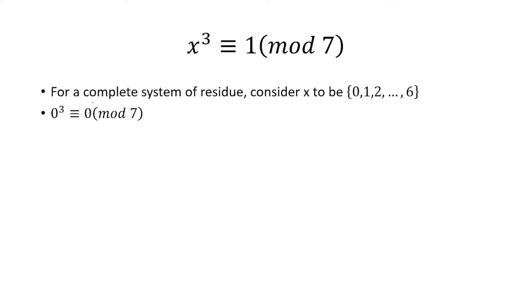First, 0 cubed is congruent to 0 mod 7. Now, whatever number is out here, if this number is less than 7, the remainder will also be the same. 1 cubed, that's 1, so 1 is congruent to 1 mod 7.